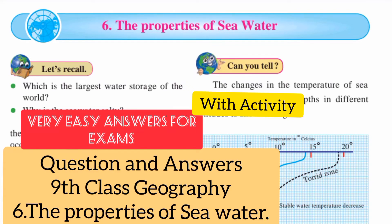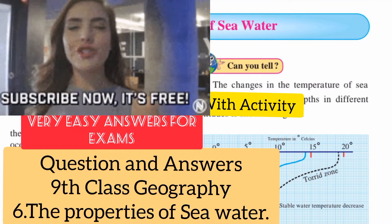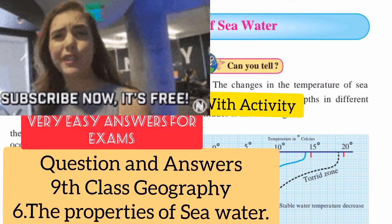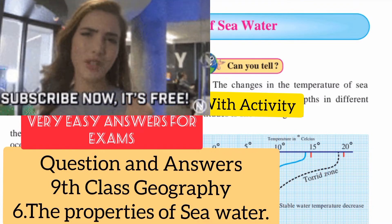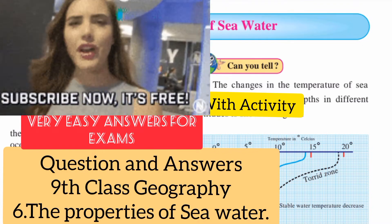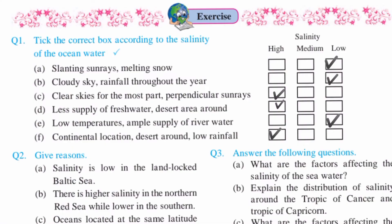Hello students, welcome to the channel. Today I'm going to give the answer of Chapter 6: The Properties of Sea Water. The previous notes are already given on my channel — you can find them in my study playlist. Let's solve the question-answer from the exercise. First one: tick the correct box according to the salinity of the ocean water.